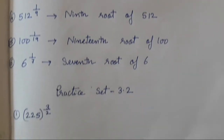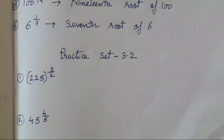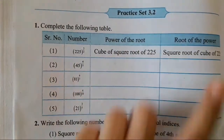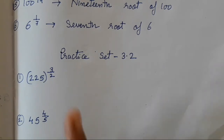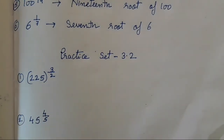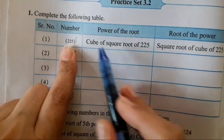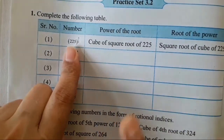The first exercise has been done. Let's move on to Practice Set 3.2. There is a table given — you can solve it in table form or in the open form as I am doing. Any one format can be done. In this question, complete the table: a number is given and you have to find the power of the root and the root of the power.